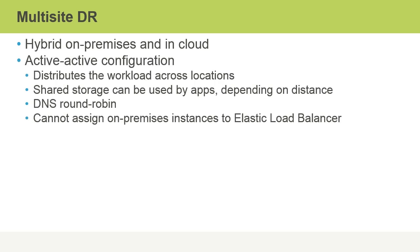An active-active configuration distributes the workload across these locations. Shared storage might be used by application services depending on the distances involved. For example, a website firm might use the same storage for clustering purposes. DNS round-robin can also be used in an active-active configuration, whereby we have multiple DNS A-records that point to different IP addresses, because we would have a presence for our IT service on-premises as well as in the cloud.